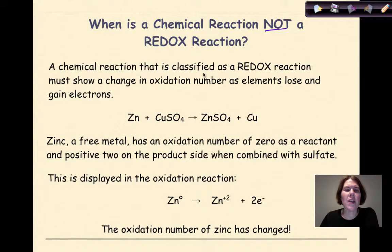When is a chemical reaction not a redox reaction? Remember, a chemical reaction that is classified as a redox reaction must show a change in oxidation number as elements lose and gain electrons. Let's look at this equation down here. Zinc plus copper sulfate yields zinc sulfate and copper metal.